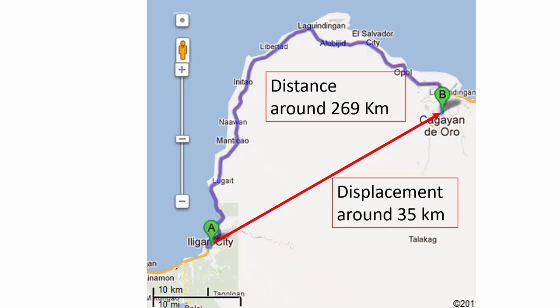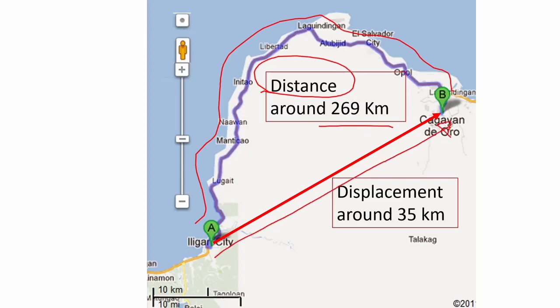Let's say you travel from Iligan to CDO. The total distance can be measured from the starting point, Iligan, to the final point in CDO. The distance would be around 269 kilometers. For the displacement, which is measured from its reference point which is Iligan to its final position CDO, it would be around 35 kilometers.